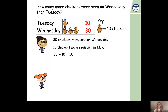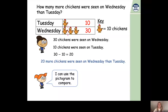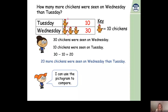There's also a visual way of working this out using the pictogram to compare. You draw a line after the last chicken on the day with fewer chickens — Tuesday with one chicken picture. Then count how many chickens are on the other side of the line on Wednesday. There are two chickens on the other side, and two chickens represent 20. We get the same answer — 20 more chickens were seen on Wednesday than Tuesday.